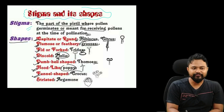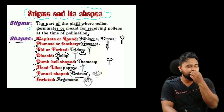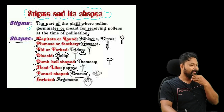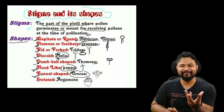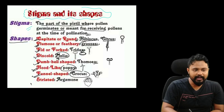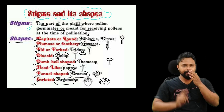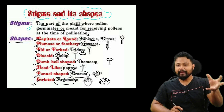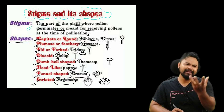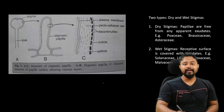Seventh shape: funnel-shaped. Example: Crocus — funnel means a funnel/pipe type shape. Eighth shape: straighted. Example: Argymon — straighted means a straight shape. So these are all the shapes of stigma.